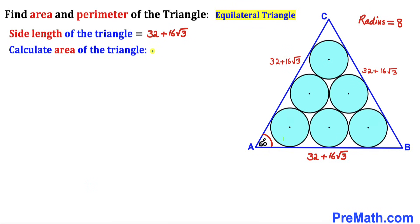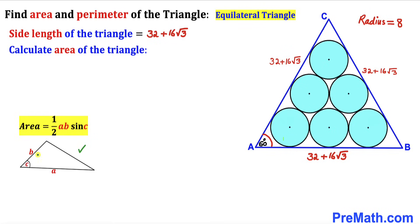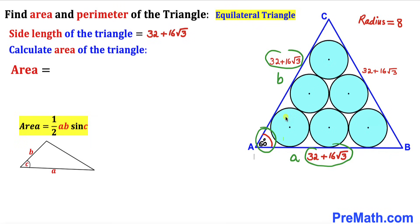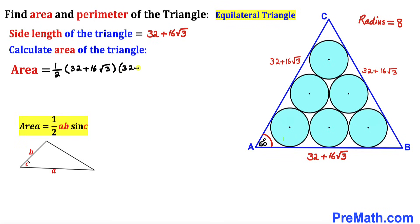Next, let's calculate the area of triangle ABC. Recall the area formula: Area = ½ × a × b × sin(C), where a and b are side lengths and C is the included angle. In our case both side lengths are 32 + 16√3 and the included angle is 60 degrees, so Area = ½ × (32 + 16√3) × (32 + 16√3) × sin(60°).